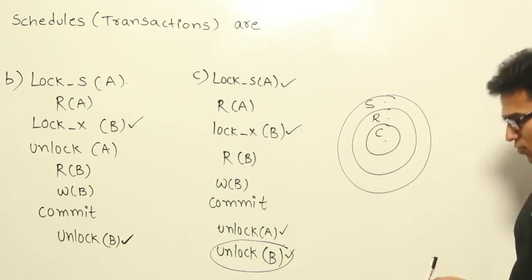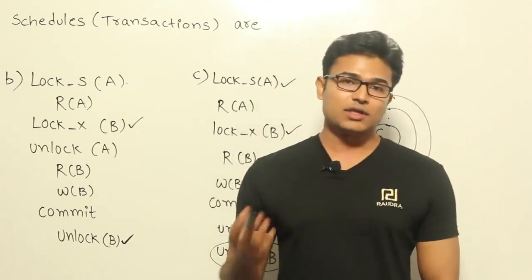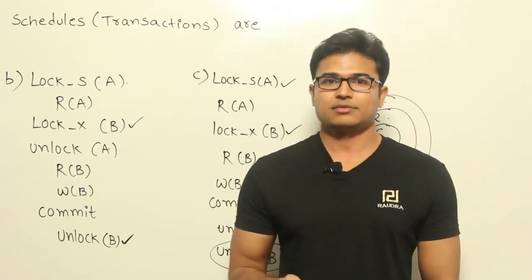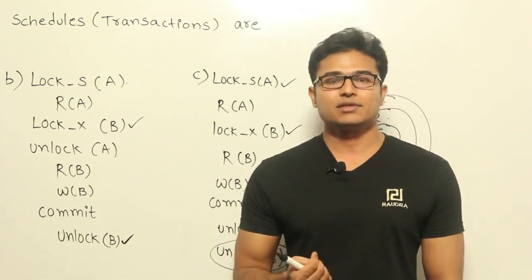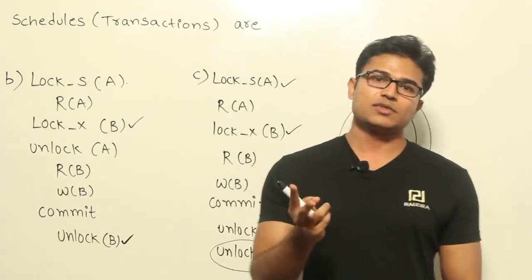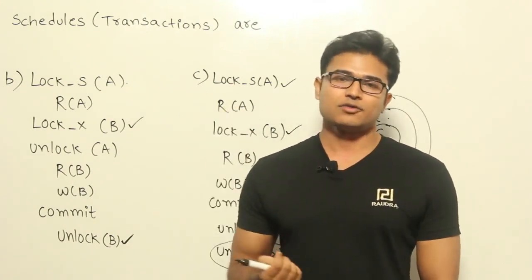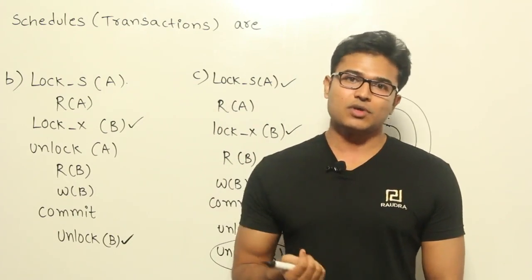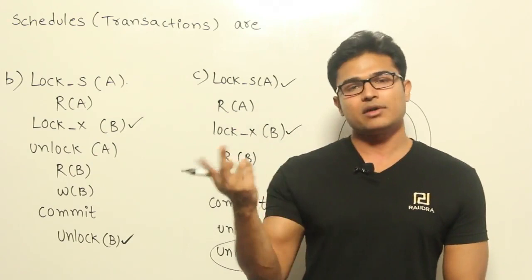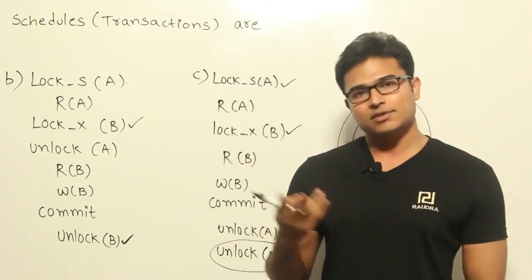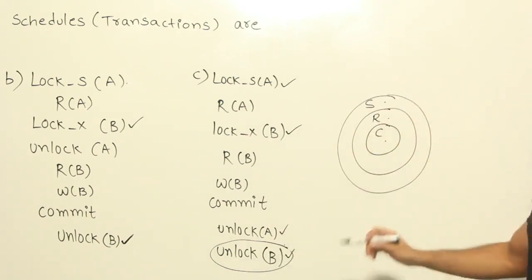What I mean by this is: in conservative, you release all locks after commit. The same applies in rigorous. In rigorous, you release both exclusive locks and shared locks after commit. In strict, you only need to talk about exclusive locks. Since rigorous is already releasing exclusive locks after commit, every rigorous is already strict. That is the meaning of this hierarchy.